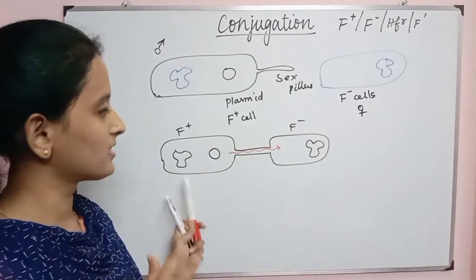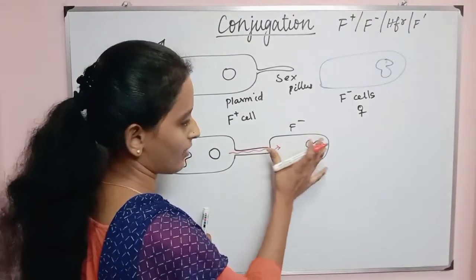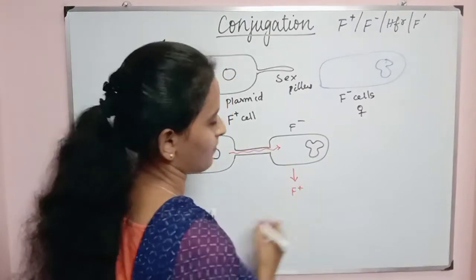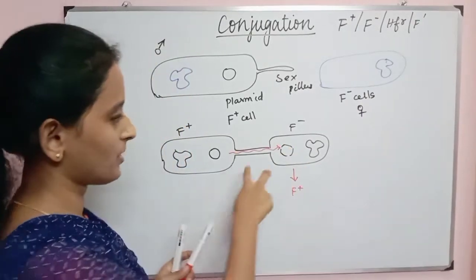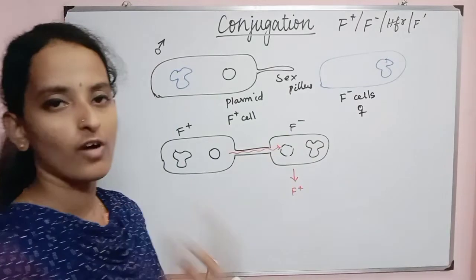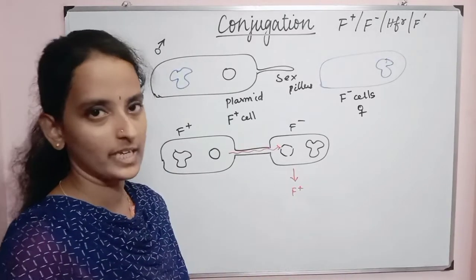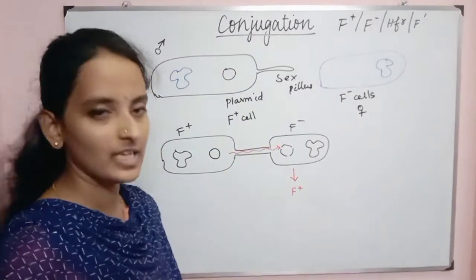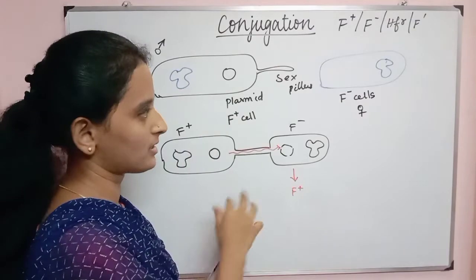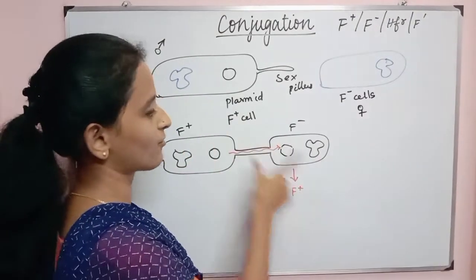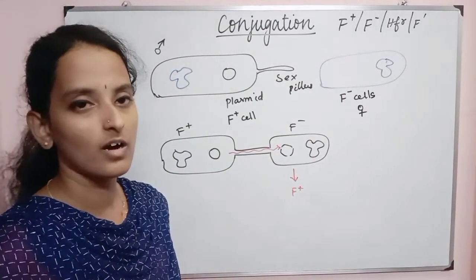The plasmid is now going to transfer to the F- cell. After transfer, the F- cell becomes an F+ cell. The plasmid is self-replicated — a strand of the plasmid self-replicates and forms a new plasmid — and that cell becomes F+. So plasmid is an extra-chromosomal DNA present in bacteria, and it is self-replicating. When F+ and F- cells conjugate, the F- cell becomes F+.